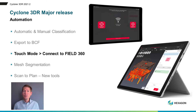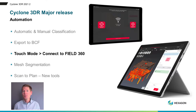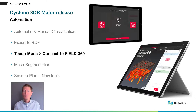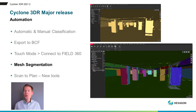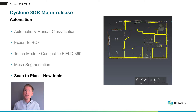Connect to Cyclone Field360 in touch mode. In addition to the connection to Cyclone Fieldworks, you will be able to proceed with a wireless transfer of your scanned projects from Field360 to 3DR touch mode. Mesh segmentation: a new automatic tool to make your mesh workflows quick and smart. And Scan2Plan: an updated interface and new tools to make you extract your floor plans faster.